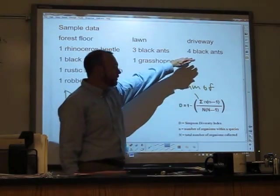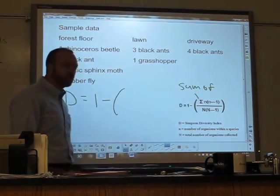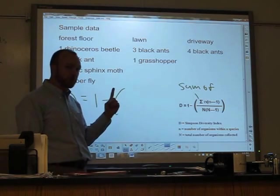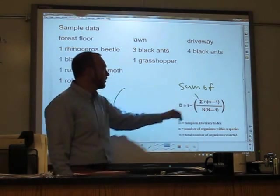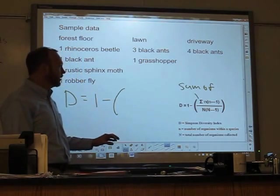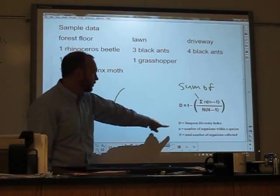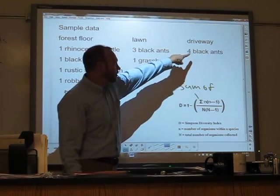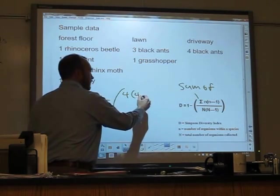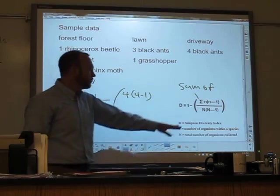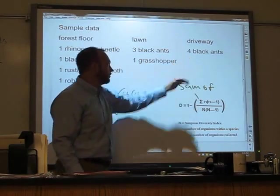Now, for my example in the driveway, I'm not actually going to have to do this sum because I only captured one kind of insect. So I'm going to not worry about that sum right now. I'm just going to put in my numbers. So the number of organisms that are black ants was four.